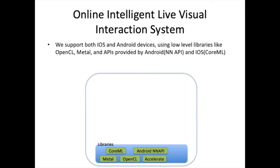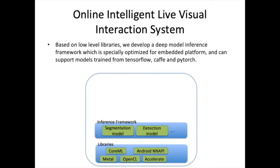We support both iOS and Android devices using low-level libraries like OpenCL, Metal, and APIs provided by Android and iOS. Based on these low-level libraries, we developed a deep model inference framework specially optimized for embedded platforms, which can support models trained from TensorFlow, Caffe, and PyTorch.